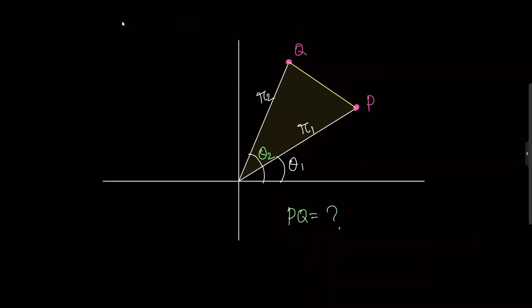We have two points. The first point P has polar coordinates r1, theta1. The second point Q has polar coordinates r2, theta2. P has modulus r1 and vector angle theta1, and Q has modulus r2 and vector angle theta2.